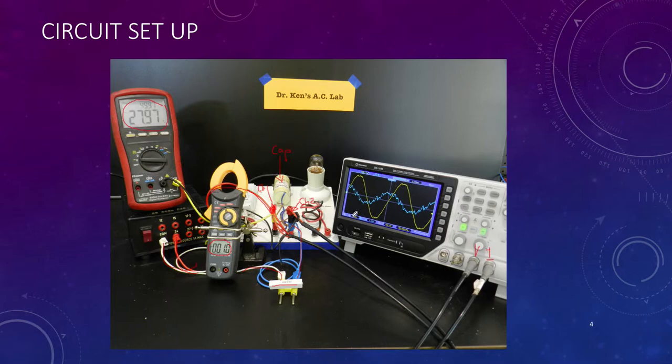So on our oscilloscope we will be measuring channel one is the voltage. So this yellow one is the voltage and the blue is the current.